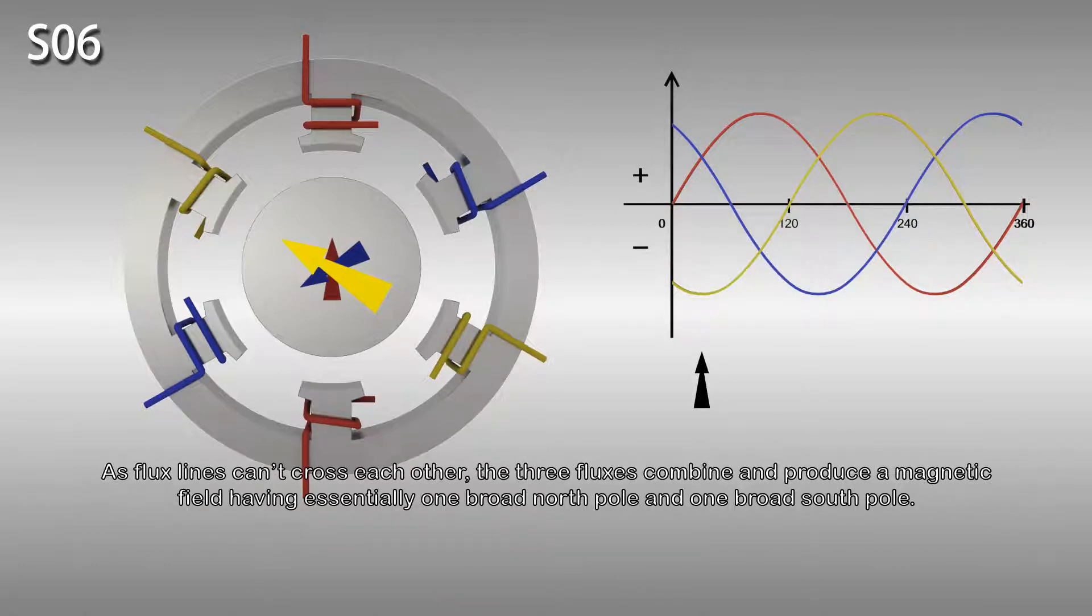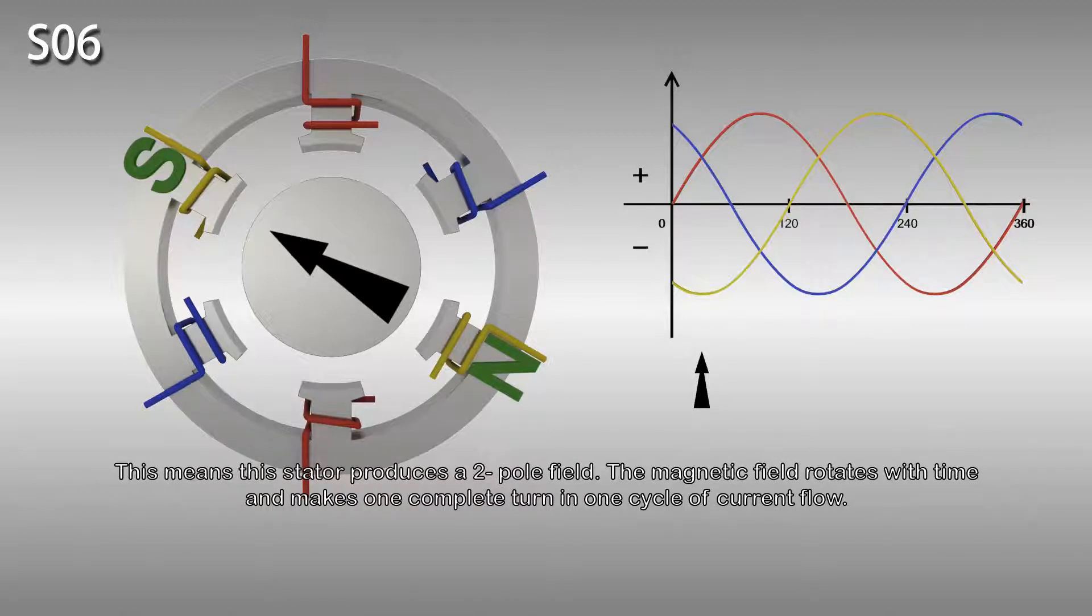As flux lines can't cross each other, the three fluxes combine and produce a magnetic field having essentially one broad north pole and one broad south pole. This means the stator produces a two-pole field. The magnetic field rotates with time and makes one complete turn in one cycle of current flow.